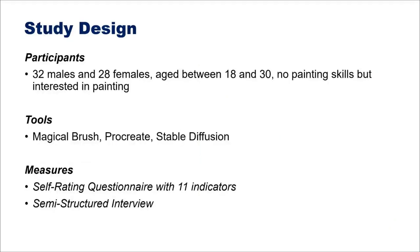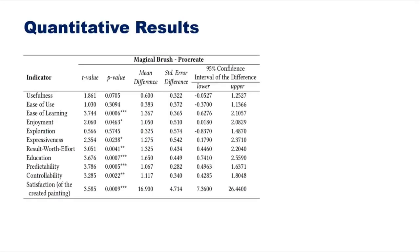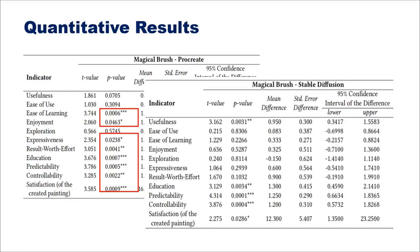We conducted our user study on 60 novice users. The participants are divided into three groups, and they separately try a different tool: Magical Brush, Procreate, and Stable Diffusion. Quantitative results showed significant differences between Magical Brush and Procreate for ease of learning, enjoyment, expressiveness, education, predictability, controllability, and satisfaction. Significant differences are also observed between Magical Brush and Stable Diffusion for usefulness, education, predictability, controllability, and satisfaction.